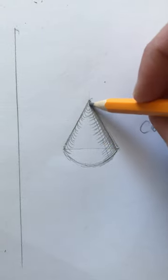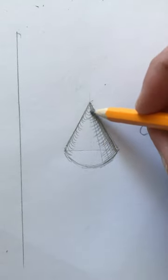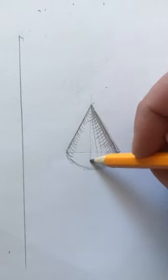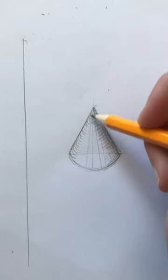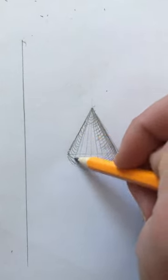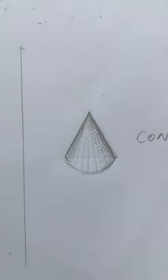But to create lighter tones, our lines will go further away. You can see that my lines are getting further away in the centre. I'm going to just join them up a little bit closer together for the edges. It's already starting to take shape.